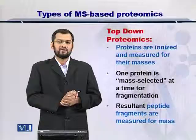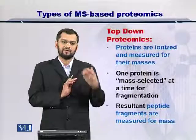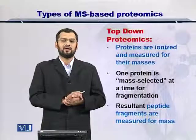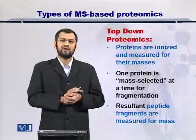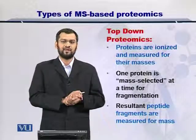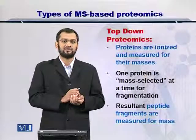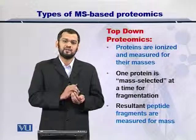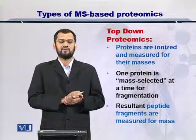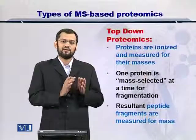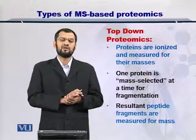In top-down proteomics, you ionize the protein so it carries a charge and can move in the magnetic field, allowing you to measure its molecular weight. Once you measure the molecular weight of the whole protein, you can search the protein sequence database for proteins with the exact same mass. An important thing to note is that proteins in your sample may carry post-translational modifications or chemical modifications, so their original mass may differ from the mass reported by the mass spectrometer. For simplicity, assuming the mass is the same as the unmodified protein, you can compare with the database and arrive at a good guess for the protein identity.